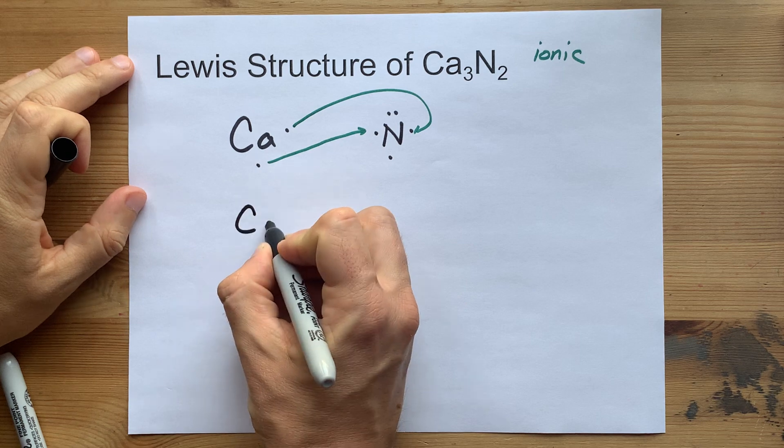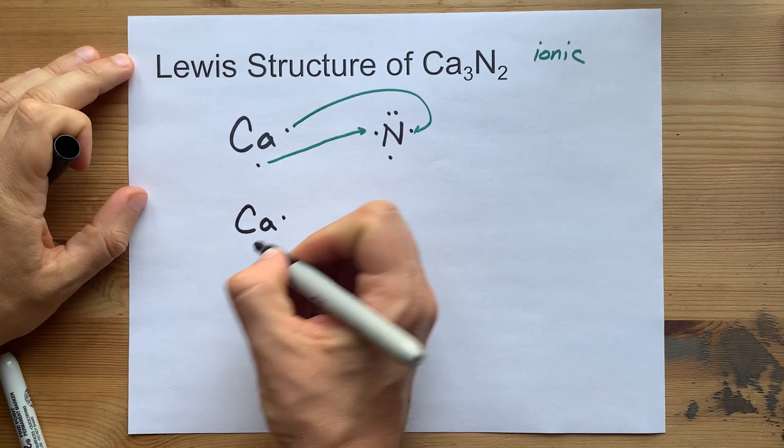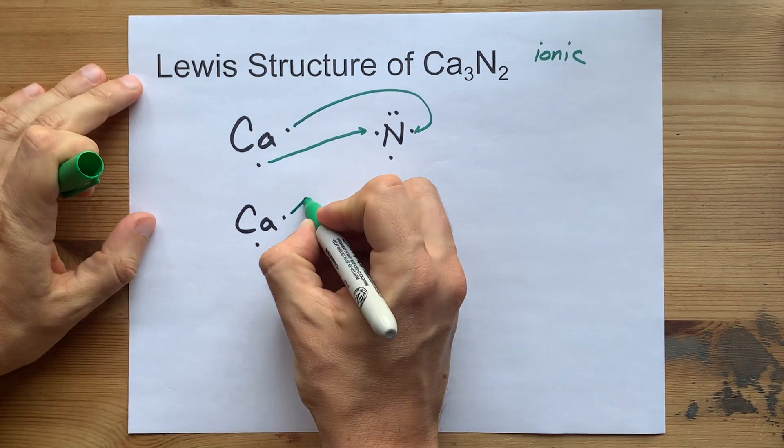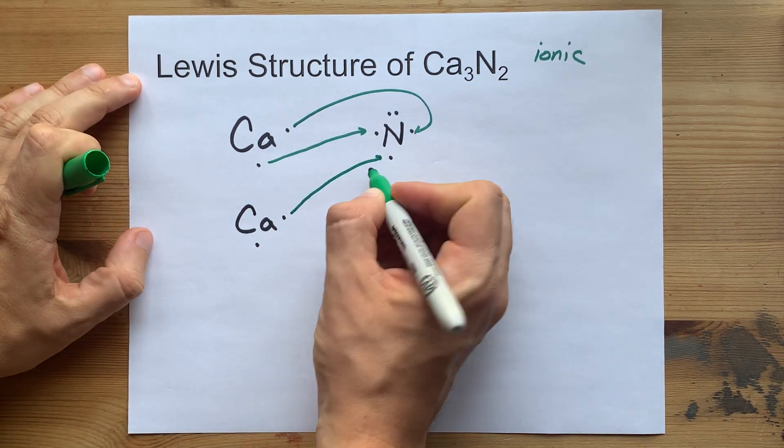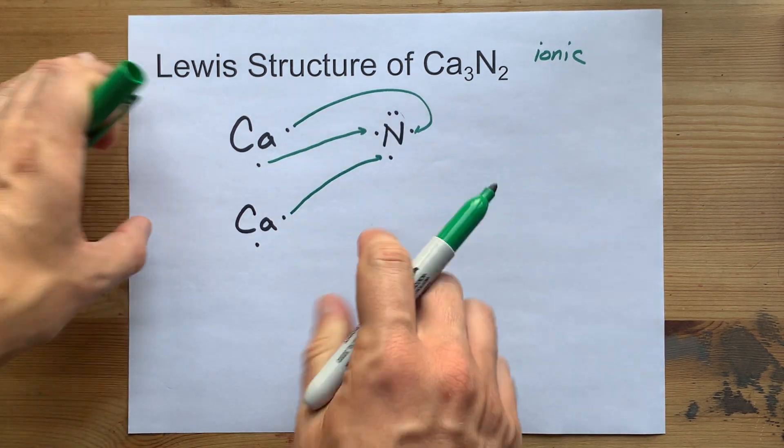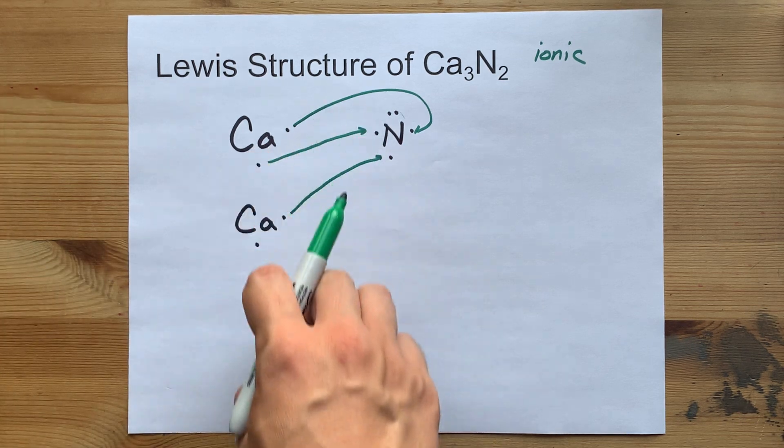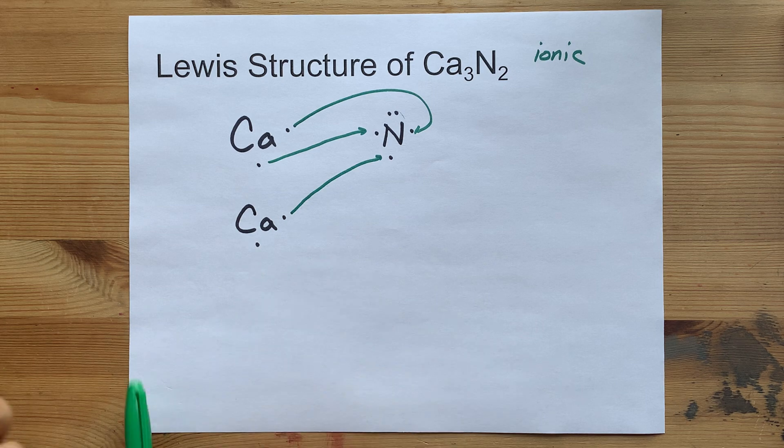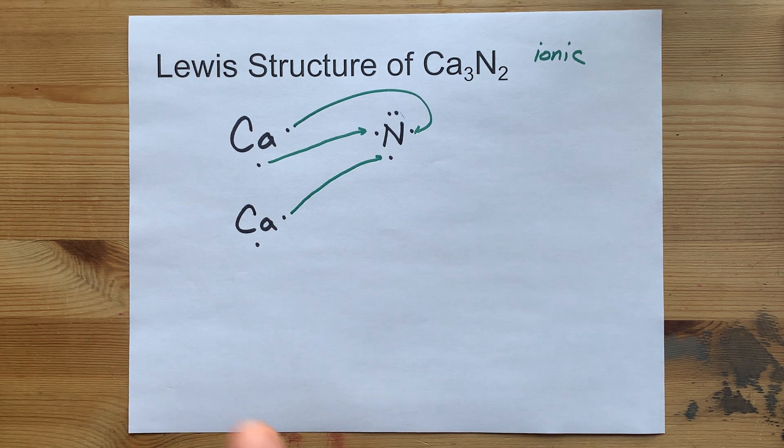That means we're going to need another calcium atom with its two valence electrons. It'll give one of those electrons away to the nitrogen. Now nitrogen has eight. It had five, and it gained three. That's eight. But now this calcium has an extra electron as well.